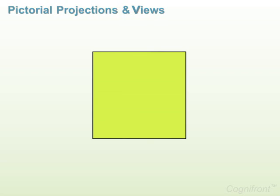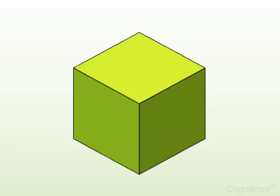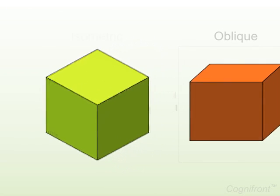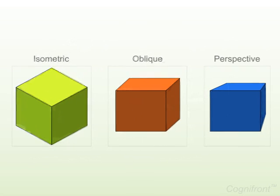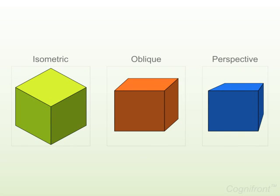A pictorial projection is a three-dimensional view of an object as it appears physically. There are three kinds of pictorial views available: isometric, oblique and perspective.